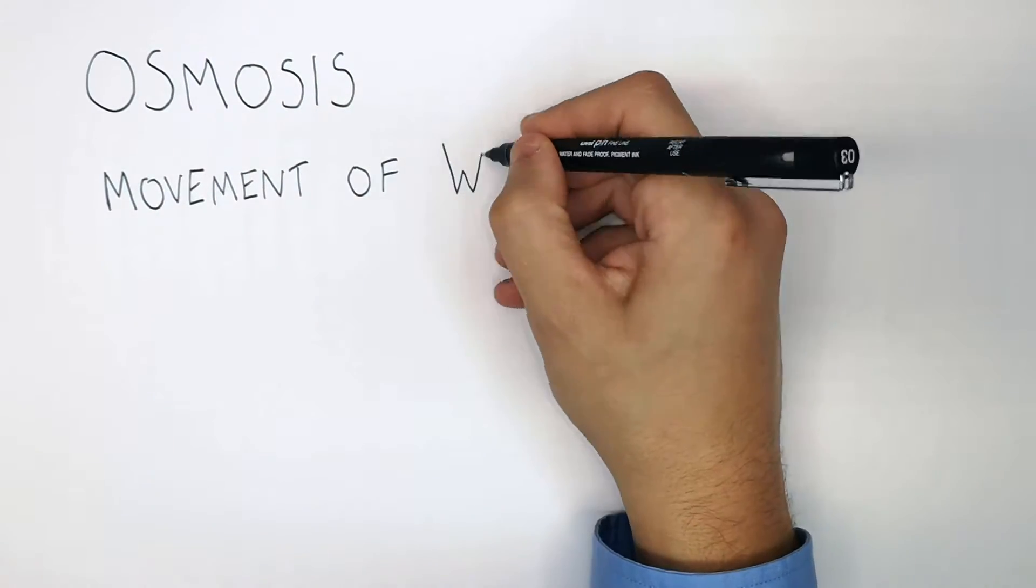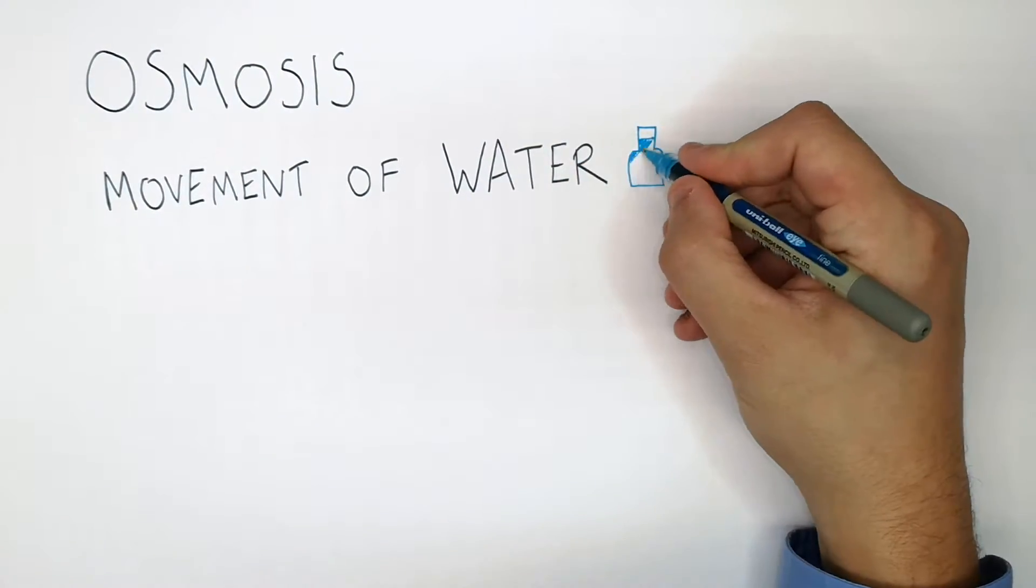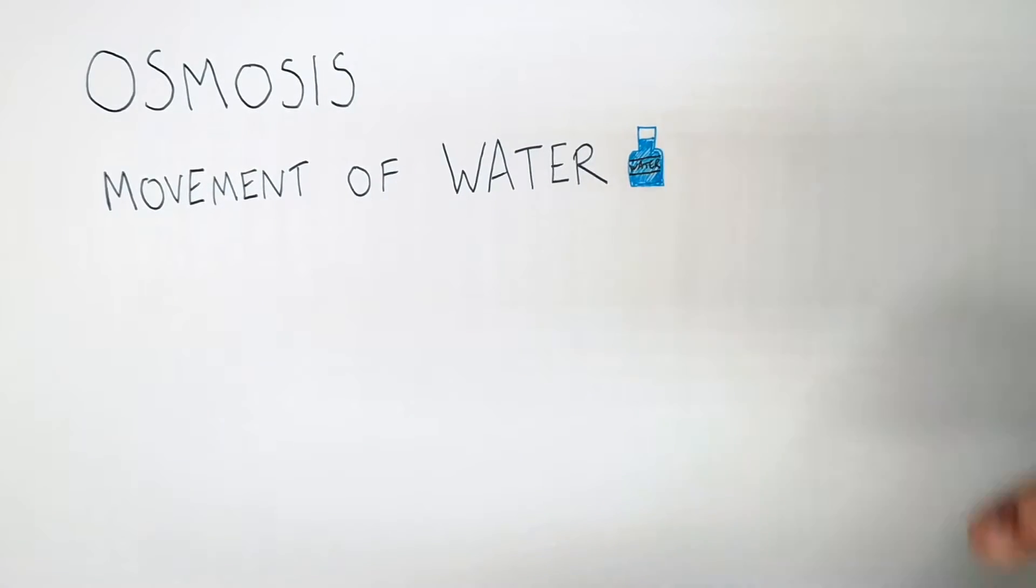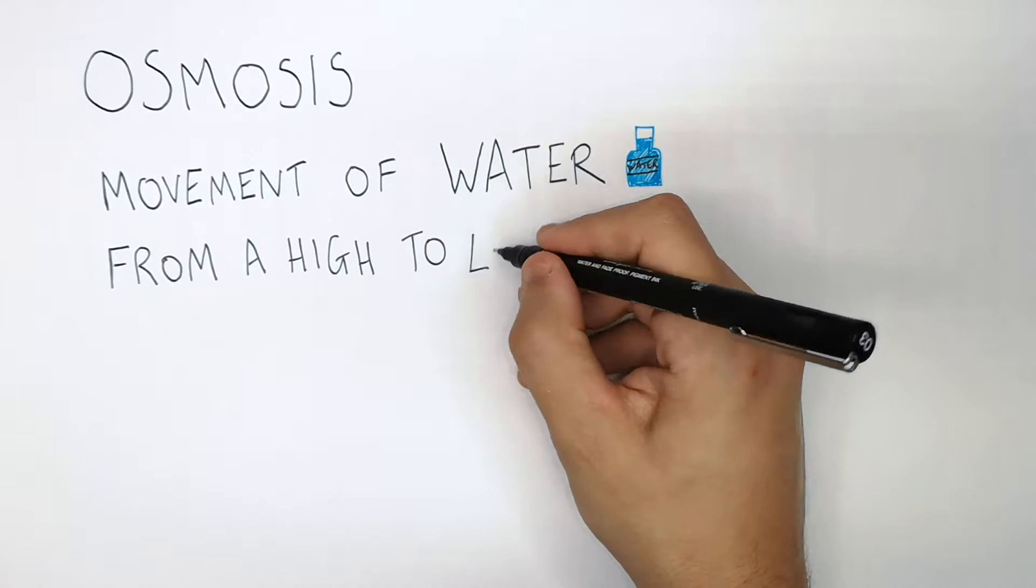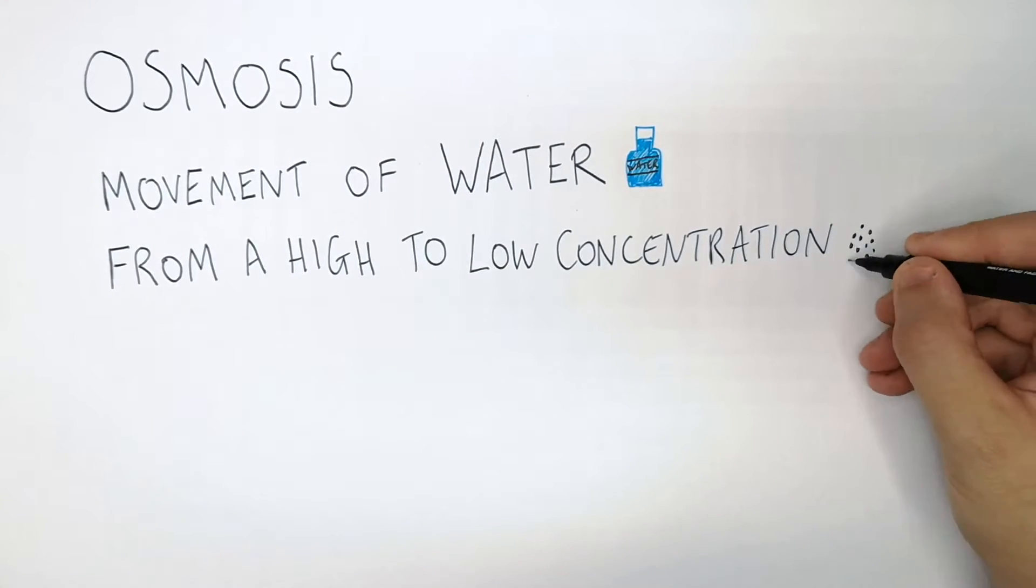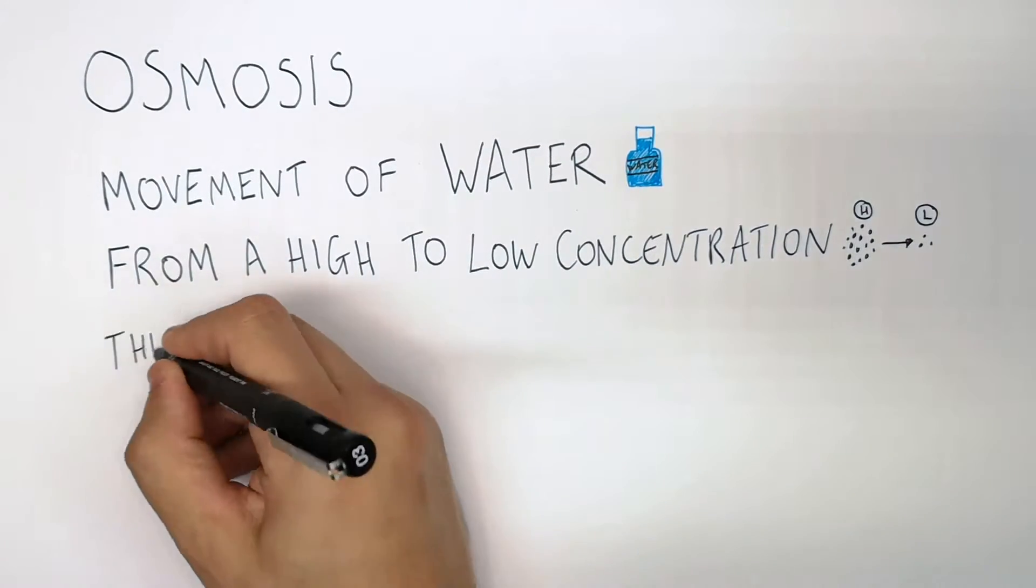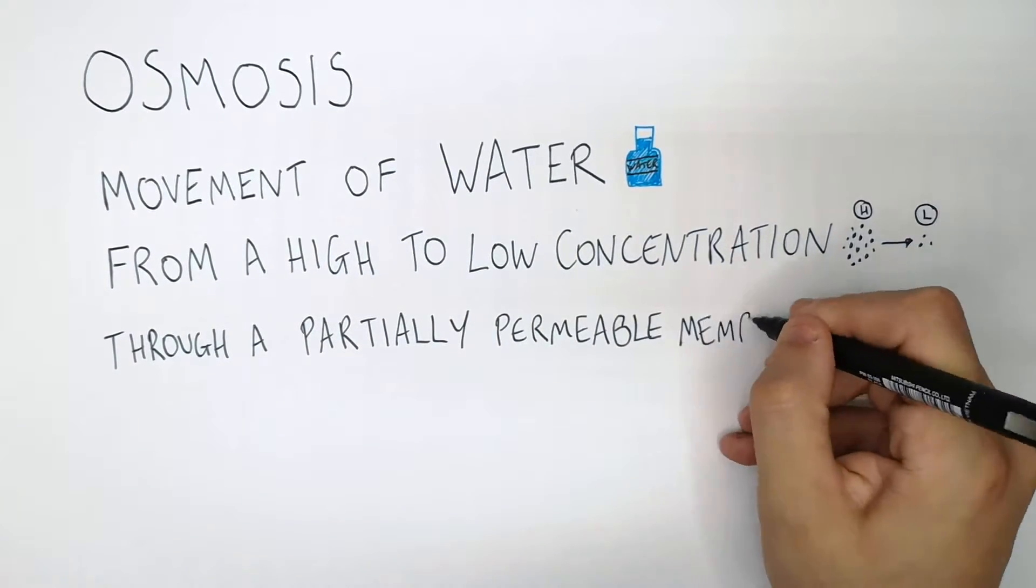Osmosis is the movement of water. It's really important to remember: from an area of high concentration to low concentration, from high to low concentration, through a partially permeable membrane.